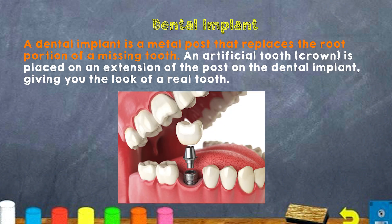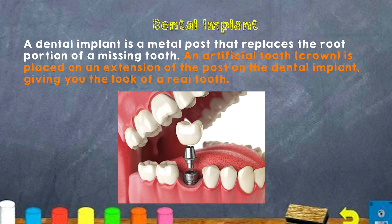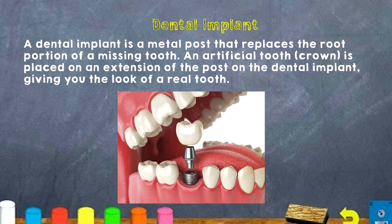Next, you have a dental implant. A dental implant is a metal post that replicates the root portion of a missing tooth. An artificial tooth or crown is placed on the extension of that post, making it look like a real tooth. They put a metal post in the gum and then place a cap over it to make it look like an actual tooth.